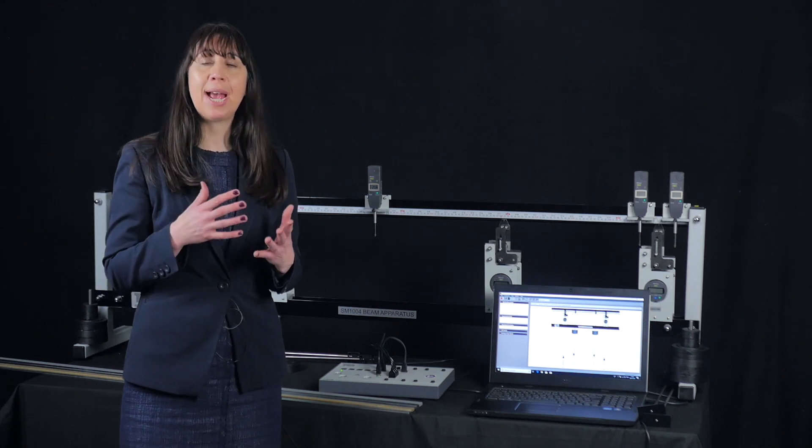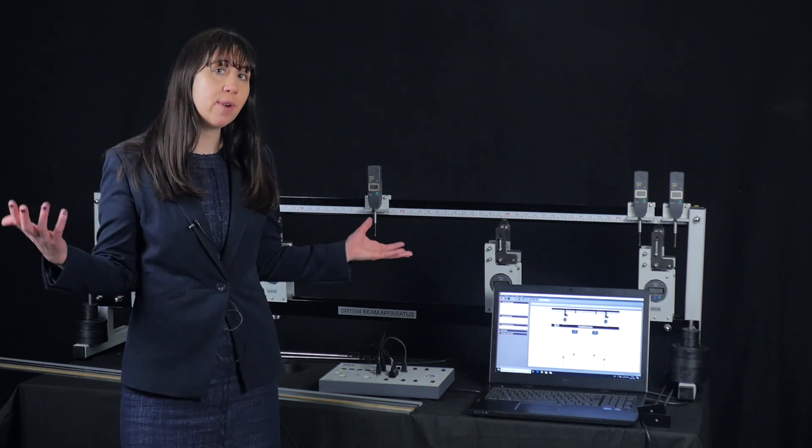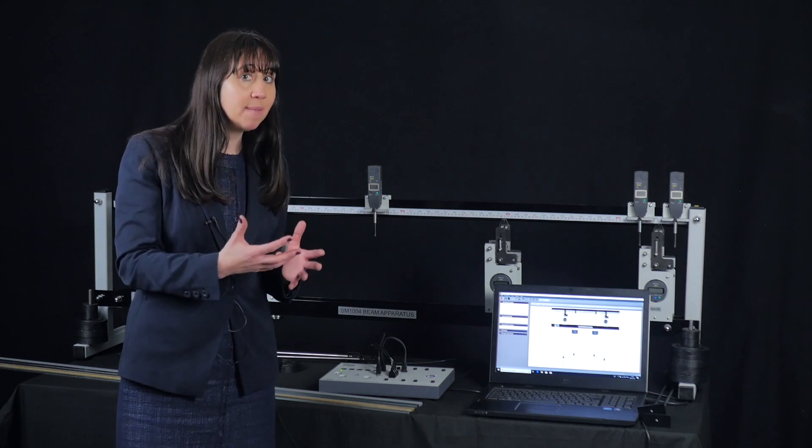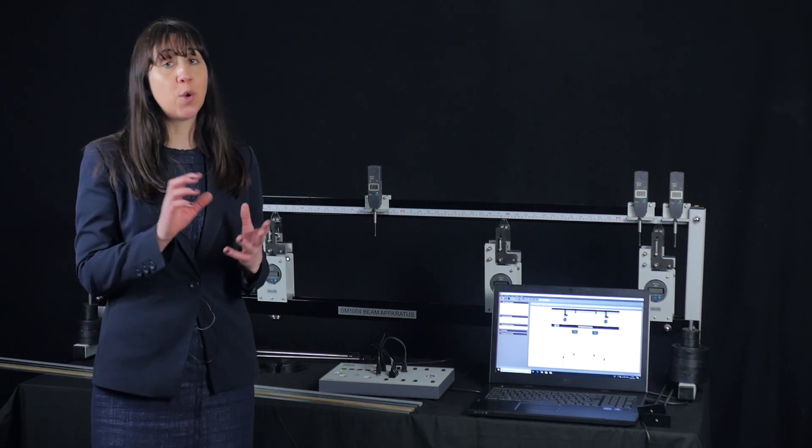Tech Equipment also offers extra beam packs, including a pack of 10 beams that cover a wider range of materials including standard metals with different thicknesses and lengths, compound metals, and a wood beam.